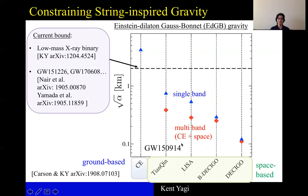Whereas if we can realize multiband observation between Cosmic Explorer and each of these space-based detectors, for example LISA here, then you can further constrain this square root of alpha by a factor of two to three.